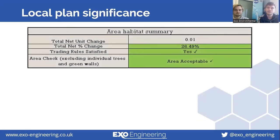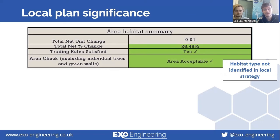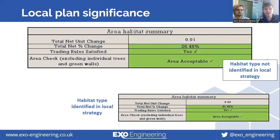This is the area habitat summary from the data we've input into the metric. We can see that we've achieved our biodiversity net gain objectives — we've got a percentage increase of 26.49%, which exceeds the required 10%. Our trading rules have been satisfied; we've not got any high distinctiveness habitats being replaced by lower distinctiveness habitats, and our area check is also acceptable. Now, you'll remember that our target habitat type was not included in the local strategy, but it could actually make quite a big difference to our final biodiversity net gain percentage. The only thing we've changed is stating that the habitat type being created has been identified in local strategy, and we can see just how big a difference this can have on our final biodiversity net gain percentage.